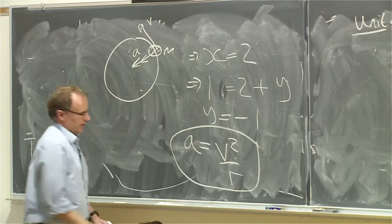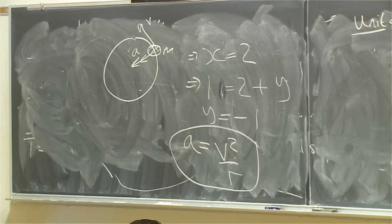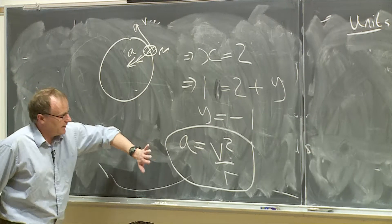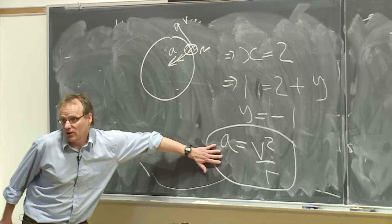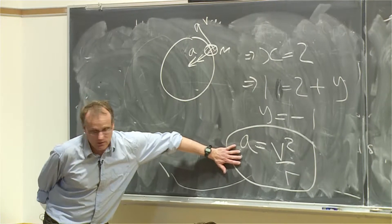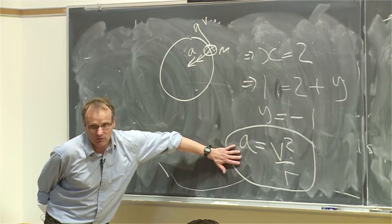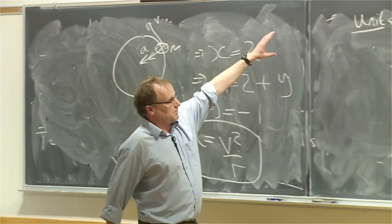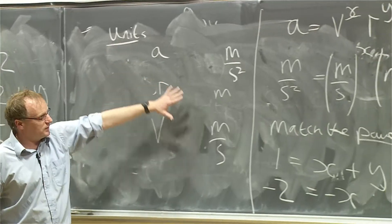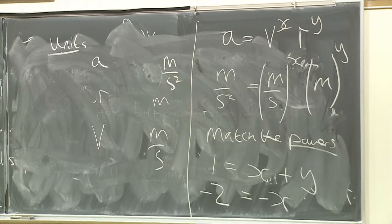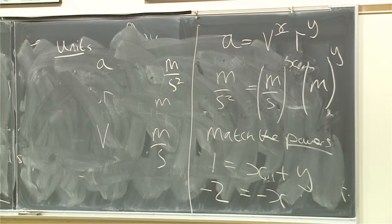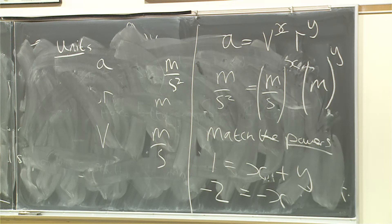Actually, we're going to use this a lot in homeworks, in exams, because this is the key result of circular motion. It's that the acceleration is equal to the velocity squared over R, and you can find that using this mathematical technique. This is called dimensional analysis. It's called matching the units. And it's really useful.